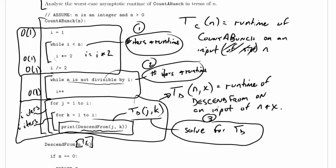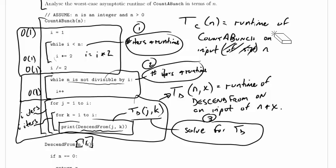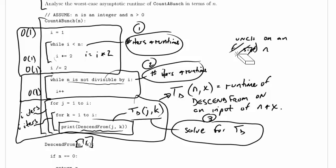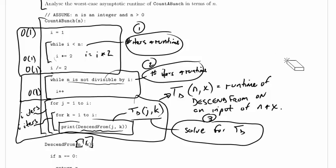We're going to start with the first of these three that I've labeled 1, 2, and 3. But in order to get started, I really need some more room. So I'm going to erase this definition of tc of n, although it's very, very useful, just to get myself some room off to the side in order to do my analysis.